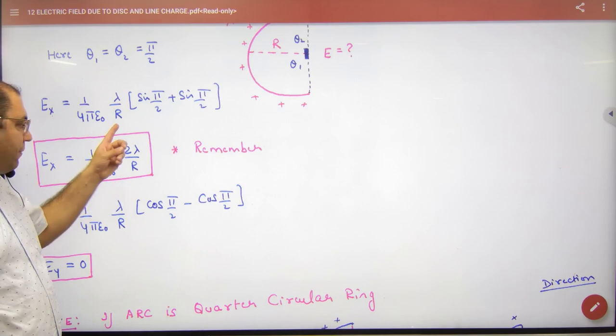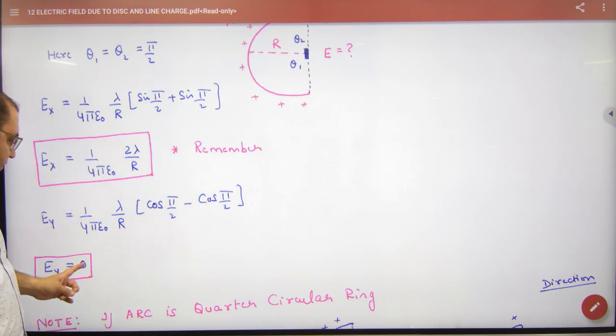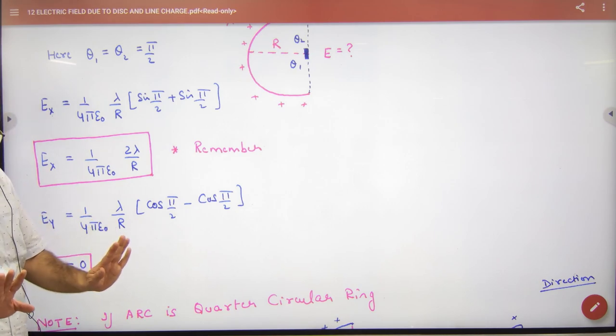1 by 4 by epsilon, 2 lambda by R. And if we put here and cancel, then E will be 0. So what is the point clear?